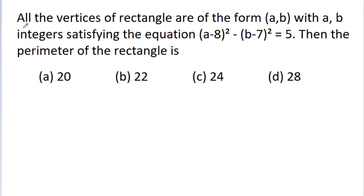In this video, we have given that all the vertices of a rectangle are of the form (a, b) with a and b integers. Find the equation (a-8)² - (b-7)² = 5, then the perimeter of the rectangle is?